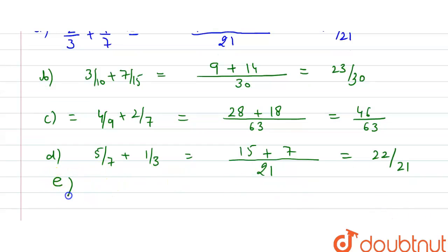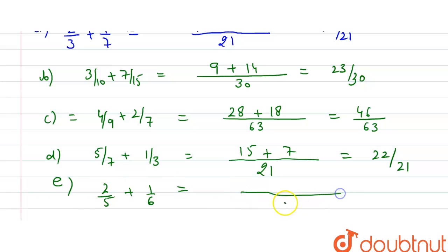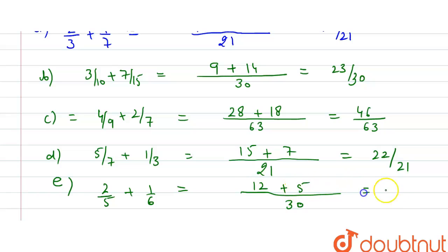Part (e) is 2/5 + 1/6. The LCM of 5 and 6 is 30. So 6 × 2 = 12, and 5 × 1 = 5. Adding gives 17/30.